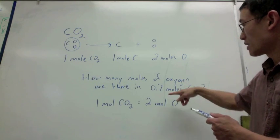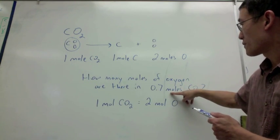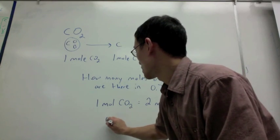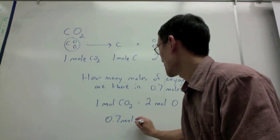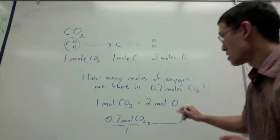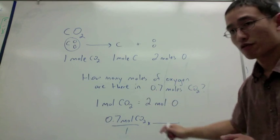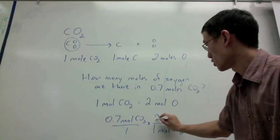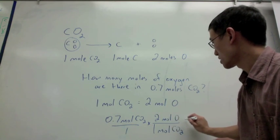So, what that allows me to do is, if I have my given as 0.7 moles of CO2, say 0.7 moles of CO2, now I have this ratio, for every mole of CO2, there's two moles of oxygen.